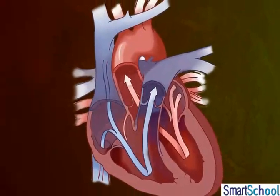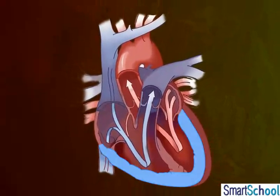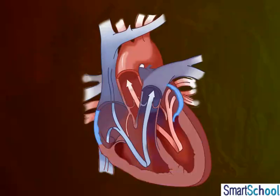Since the ventricles have to pump blood into the various organs, they possess thicker muscular walls as compared to the auricles.